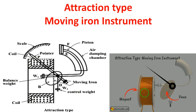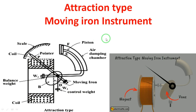When current passes through the coil, that amount of magnetic field is produced. When the magnetic field is produced, it attracts the moving iron piece. The iron piece moves to a certain angle, and the pointer shows the exact value on the scale. The amount of current passing is proportional to the deflection. This is why it is called the Attraction Type Moving Iron Instrument — because the iron piece is attracted.